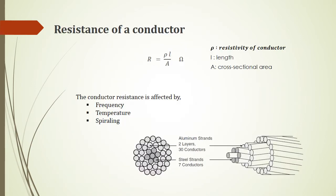First, the resistance of a conductor is given by R = ρL/A, where ρ is the resistivity of the conductor, L is the length, and A is the cross-sectional area. The conductor resistance is affected by the frequency of the AC current and the temperature of the cable.